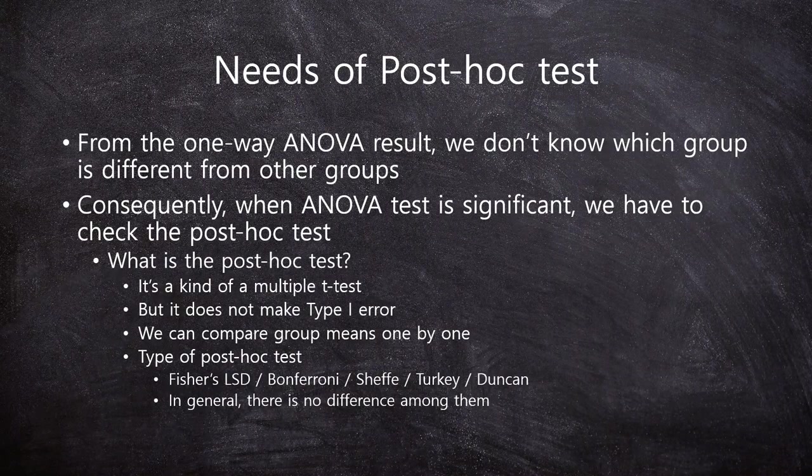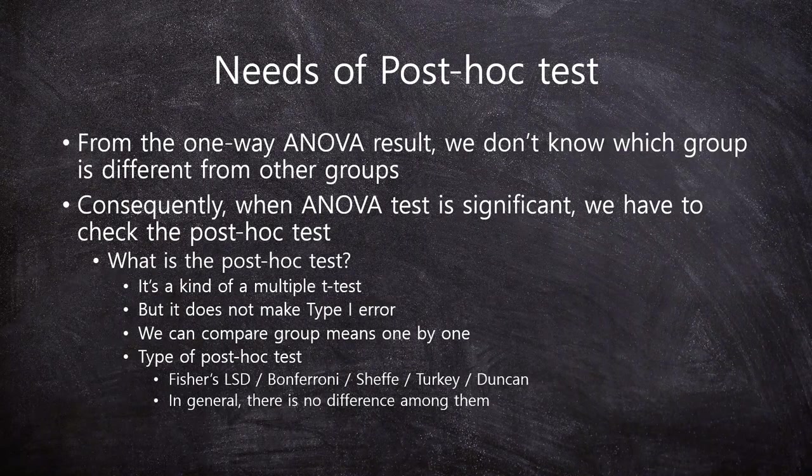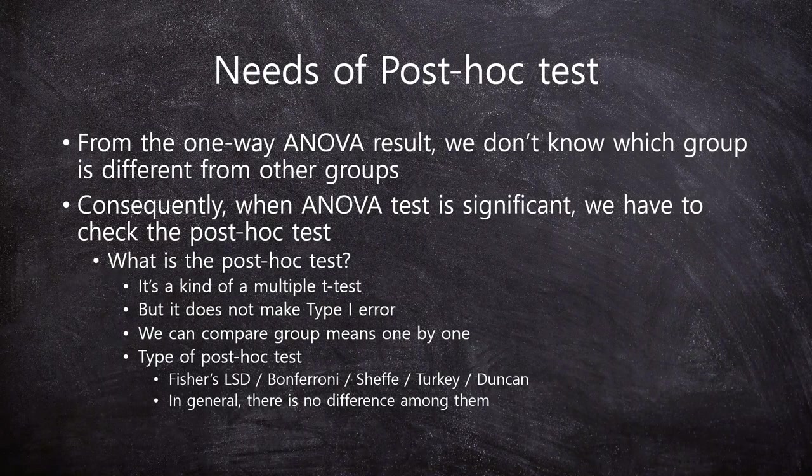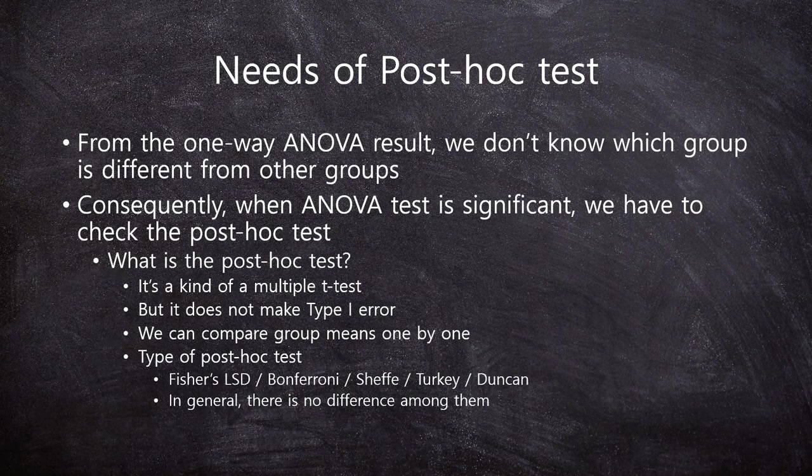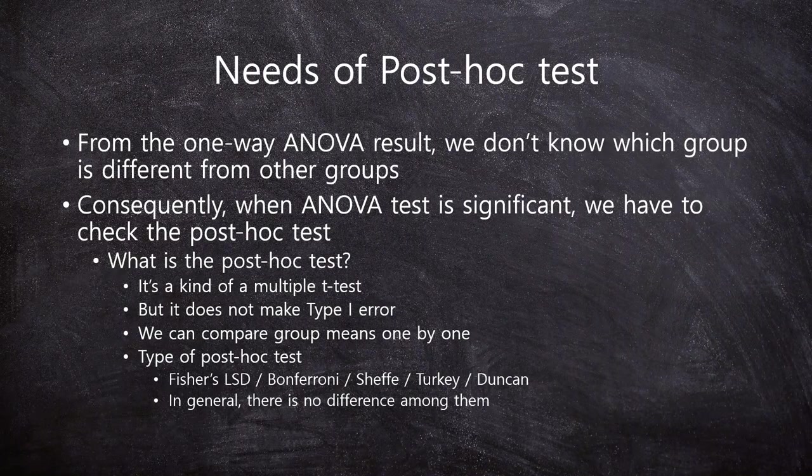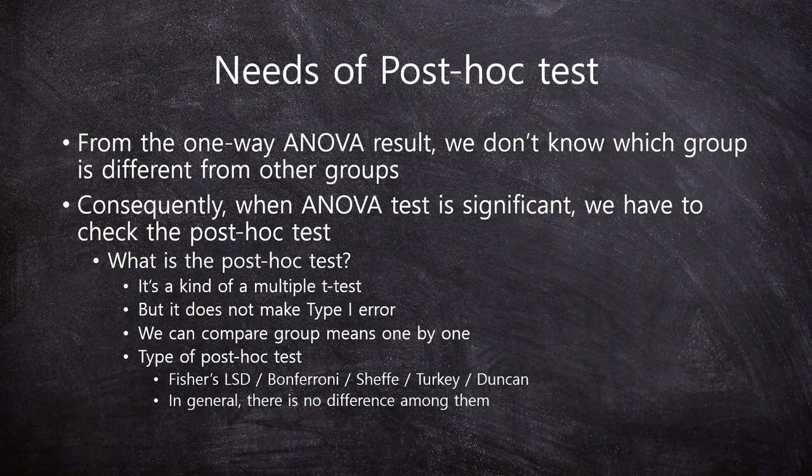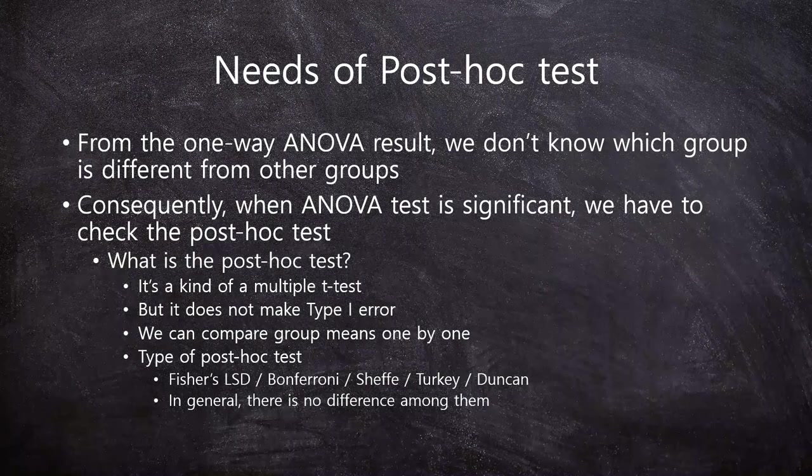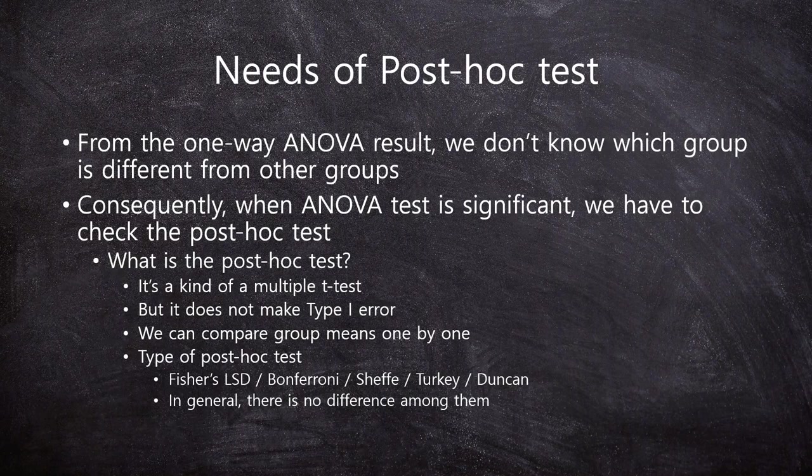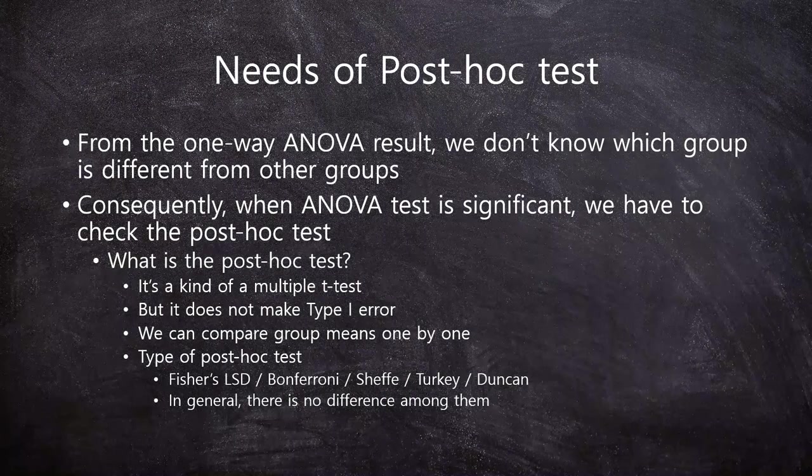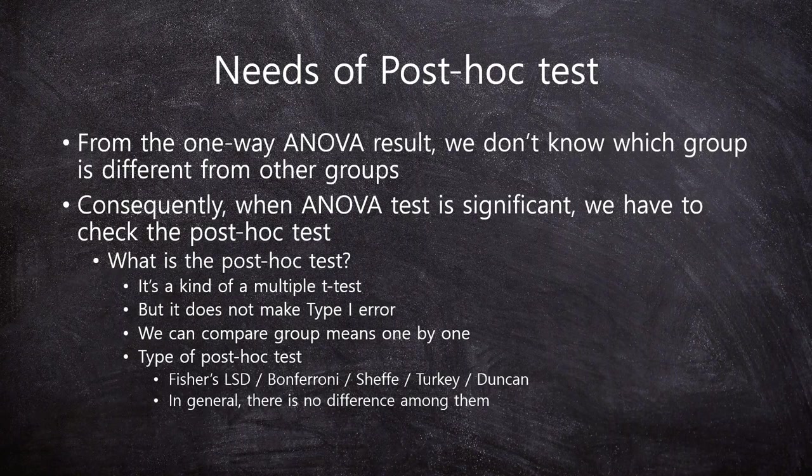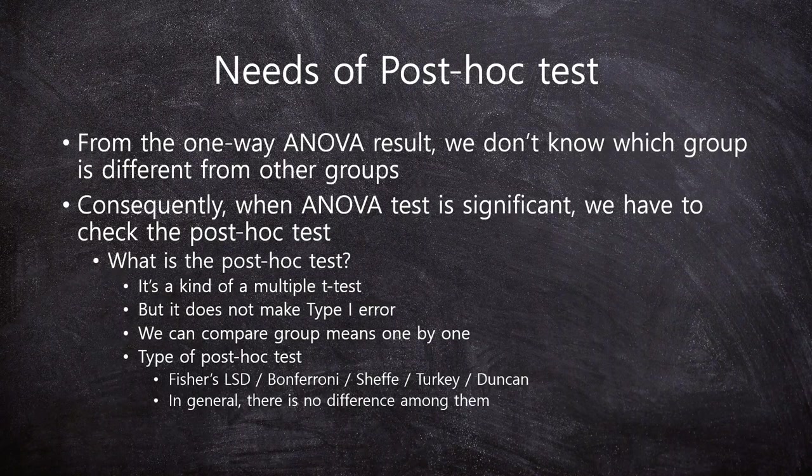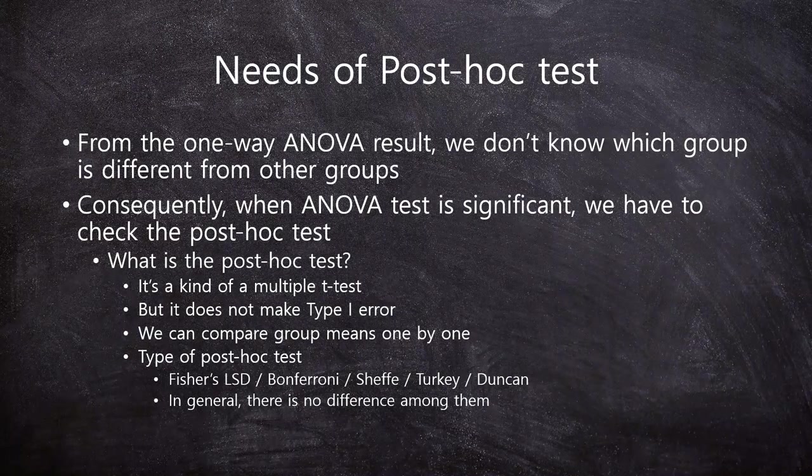So at this point, we need a post hoc test. From the one-way ANOVA result, we don't know which group is different from other groups. So after a significant result of ANOVA, we have to check the post hoc test. What is the post hoc test? It's a kind of multiple t-test, but it does not make a type 1 error. No problem. We can compare group means one by one. And there are many types of post hoc tests: Fischer, Scheffe, Bonferroni, Schaffer, Tukey, Duncan, all the statisticians' names. In general, there is no difference among them.